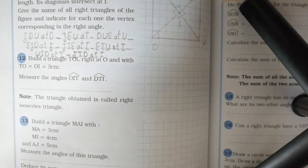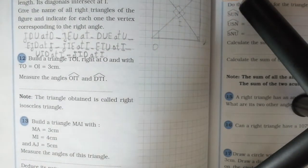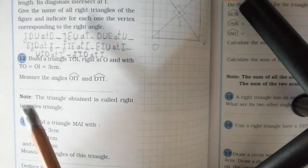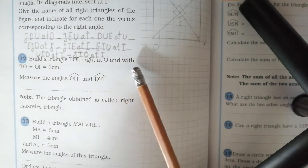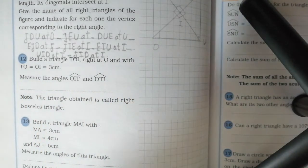Good morning. Today we solve number 12, page 164. Build a triangle TOI right at O and with TO equal OI equal 3 cm.